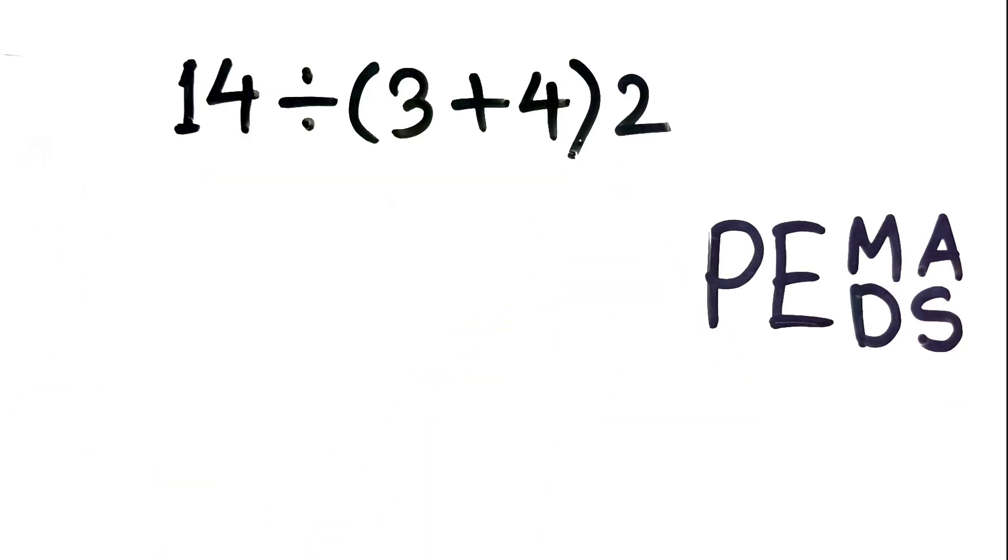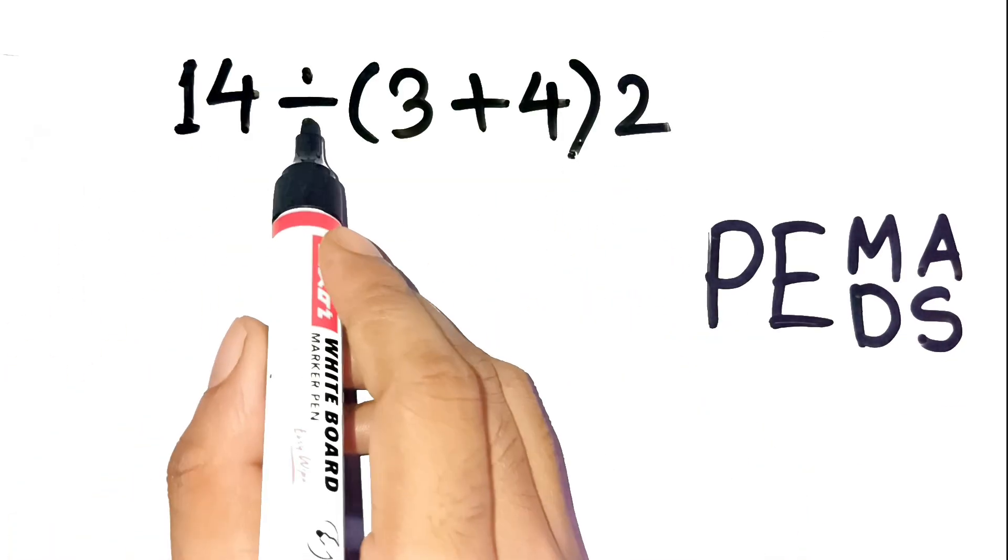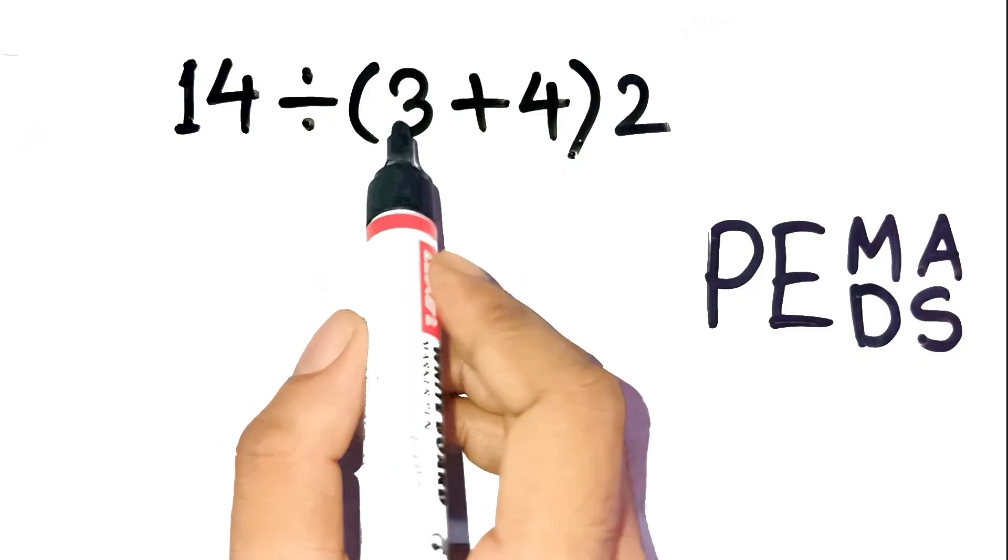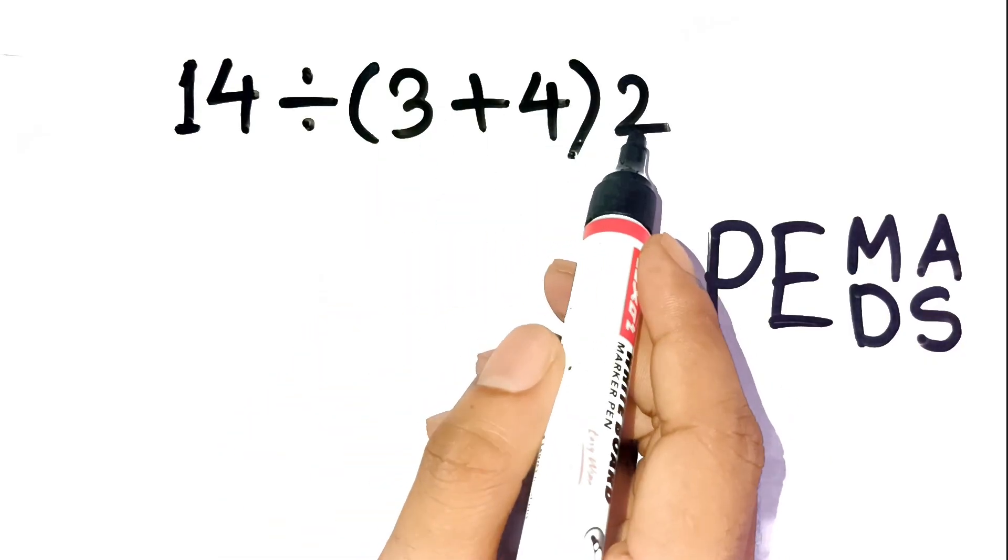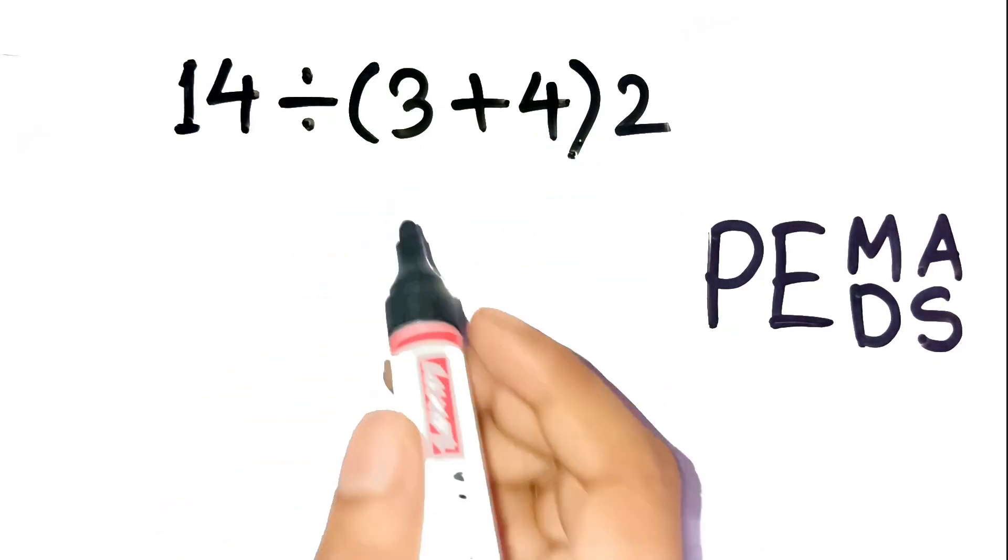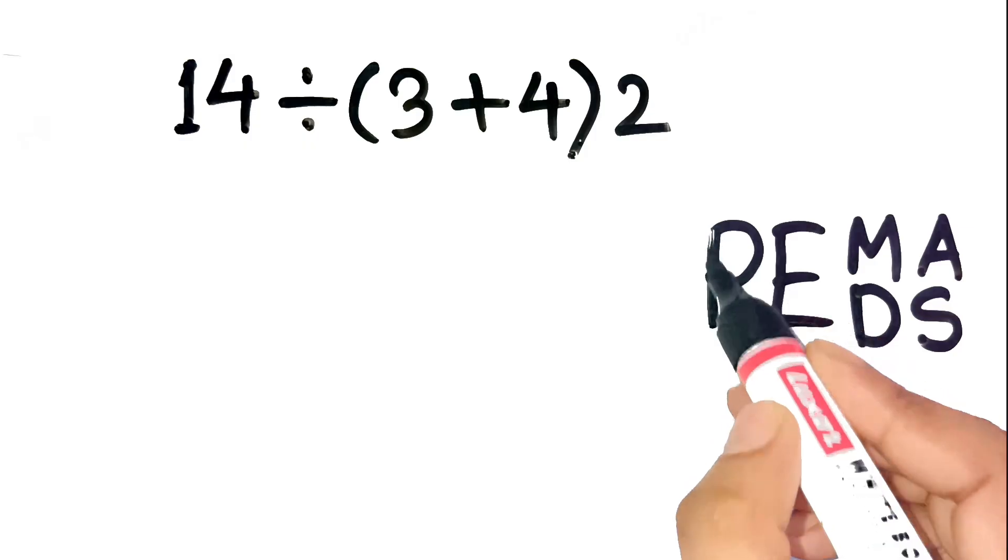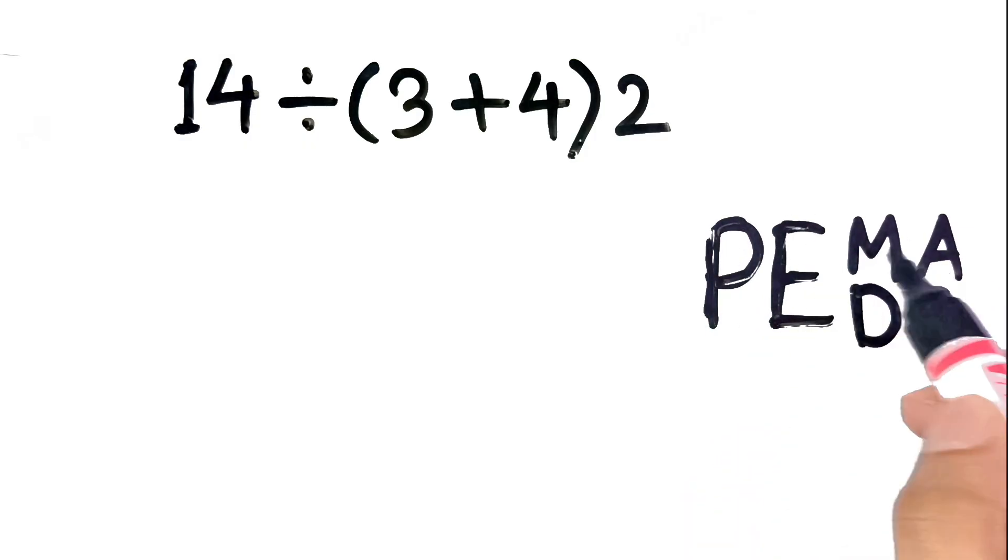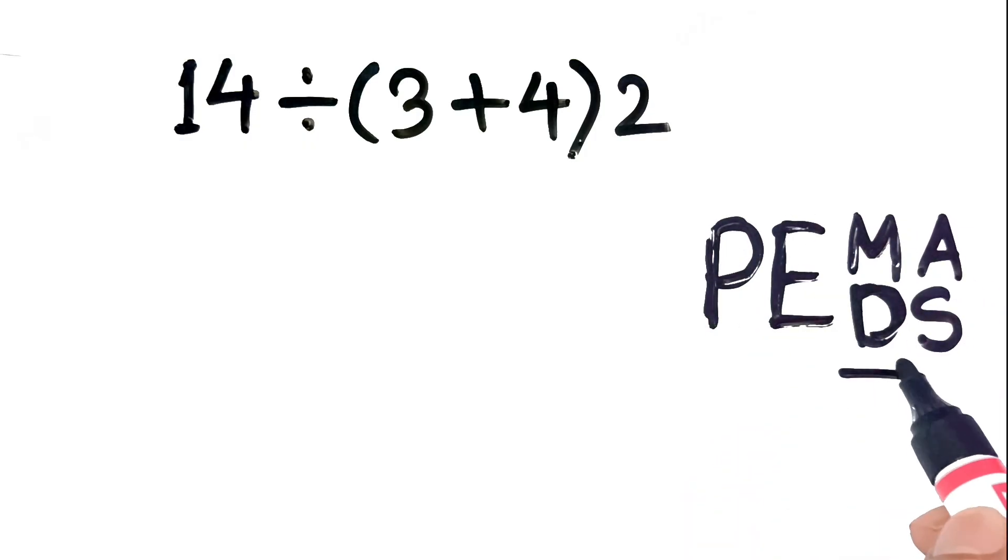Okay, now let's come to the point. So to solve 14 divided by open parentheses, 3 plus 4, close parentheses, then times 2 correctly, we need to follow PEMDAS, which stands for parentheses, exponents, multiplication and division from left to right, addition and subtraction from left to right.